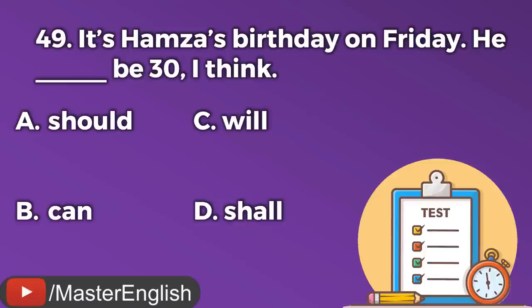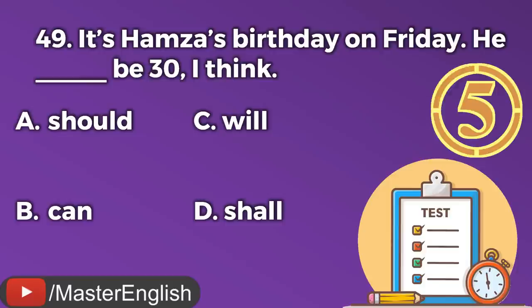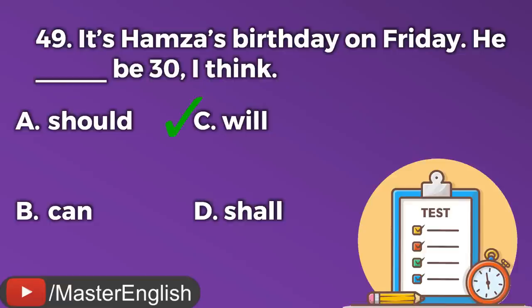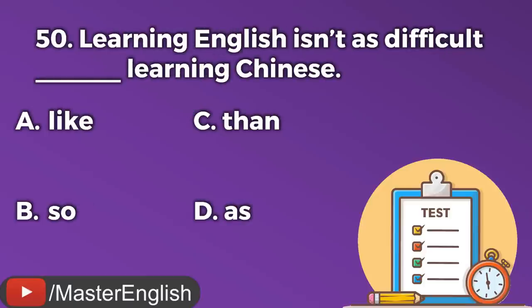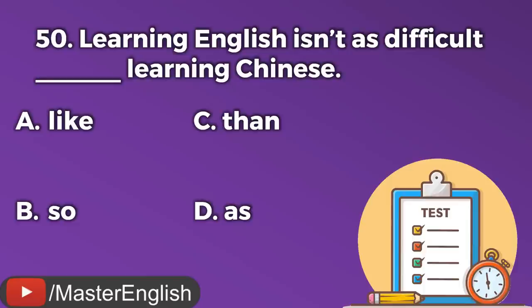Question number forty-nine. It's Hamza's birthday on Friday. He ___ 30, I think. A: Should. B: Can. C: Will. D: Shall. The correct answer is C: Will. He will be 30, I think. Question number fifty. Learning English isn't as difficult ___ learning Chinese. A: Like. B: So. C: Than. D: As. The correct answer is D: As. Learning English isn't as difficult as learning Chinese.